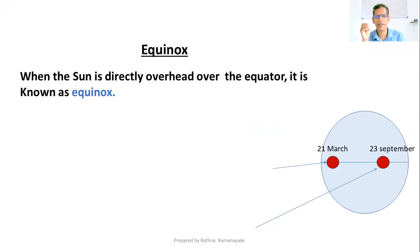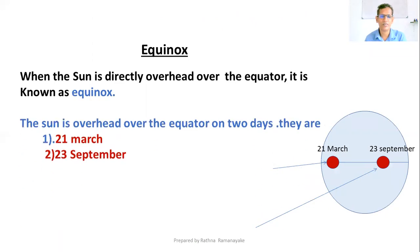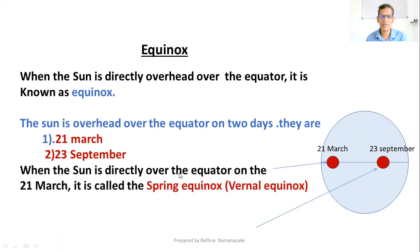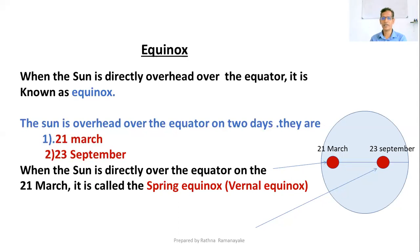The Sun is overhead over the equator on two days — 21st March and 23rd September. When the Sun is directly overhead over the equator on 21st March, it is called the Spring Equinox, or Vernal Equinox.